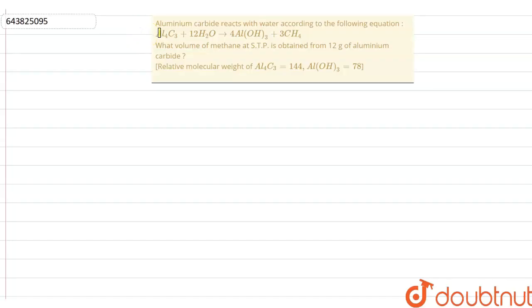Hello everyone, let's start the question. This question says that aluminium carbide reacts with water according to the following equation: Al4C3 plus 12H2O gives 4Al(OH)3 plus 3CH4.